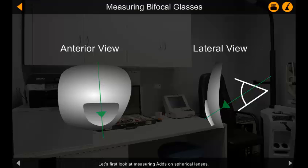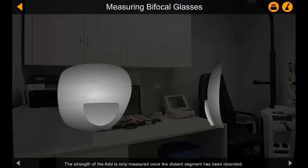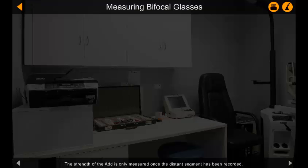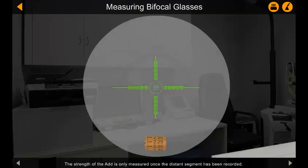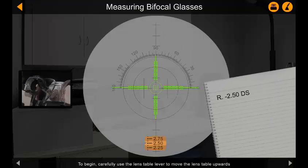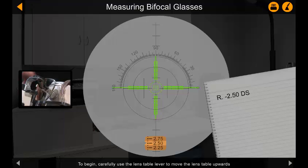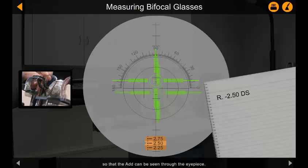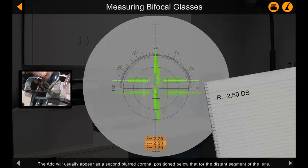Let's first look at measuring adds on spherical lenses. The strength of the add is only measured once the distance segment has been recorded. To begin, carefully use the lens table lever to move the lens table upwards so that the add can be seen through the eyepiece. The add will usually appear as a second blurred corona positioned below that for the distance segment of the lens.